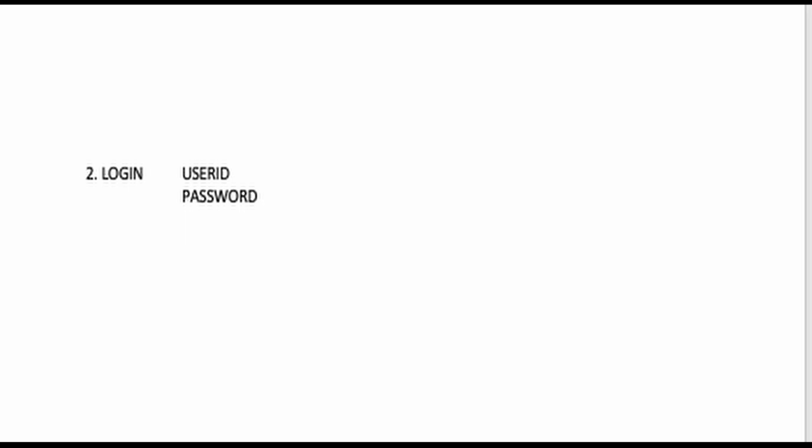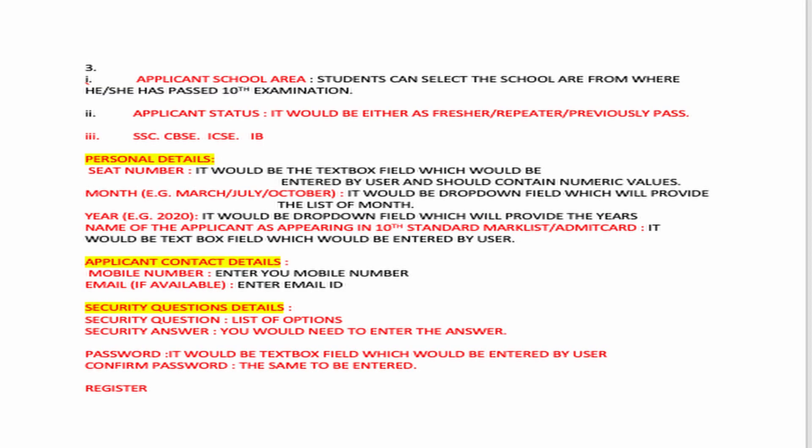You have to enter the user ID and password you received. Form Number 1 is actually to change your password. So Form Number 1 is essentially a password change, and it is to be done before your board exam results are declared. This is what you can see on the screen.